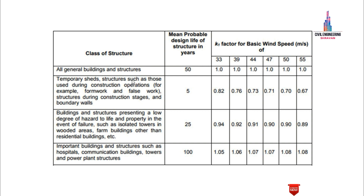The second class covers temporary structures such as those used during construction operations — for example, formwork and falsework, structures during construction stages, and boundary walls. We consider their design life as 5 years, with K1 values of 0.82, 0.76, 0.73, 0.75, 0.7, and 0.61 for the respective wind speeds. The third class covers buildings presenting a low degree of hazard to life and property — such as isolated towers in wooded areas and farm buildings other than residential — with a design life of 25 years and K1 values of 0.94, 0.92, 0.91, 0.9, 0.9, and 0.89.